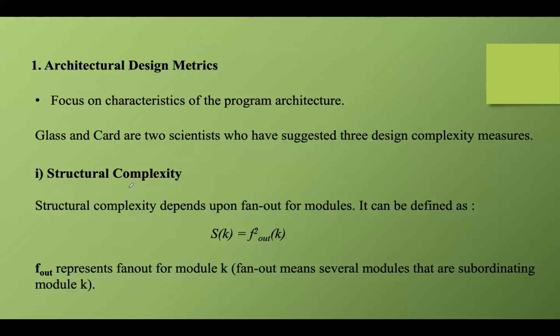Structural complexity mainly focuses on the organization and relationships within the code, particularly regarding classes and their interactions — how the classes are interacting with each other. It can be defined using the notation S(k) = f_out²(k), where fan-out represents the number of components or classes that a particular component or class interacts with or communicates with directly. In the context of software design, it often describes how many other classes a specific class depends on.